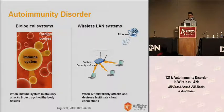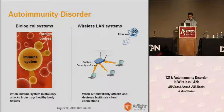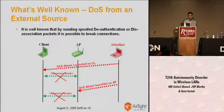When the immune system mistakenly attacks and destroys healthy body cells or tissues, this condition is known as autoimmunity disorder. What we have discovered is that similar conditions also exist in wireless LANs, where an access point mistakenly attacks and kills legitimate client connections.